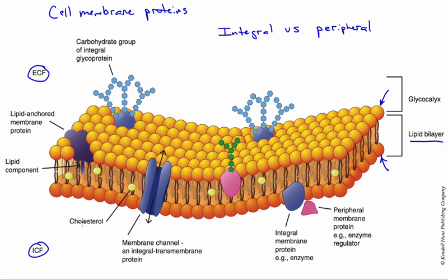We also have a significant fraction of cholesterol associated with this lipid bilayer. Cholesterol has a variety of functions, but a primary one would be regulation of membrane fluidity — that is, the ease with which the phospholipid molecules themselves, or the proteins embedded in it, can move around within that lipid bilayer.